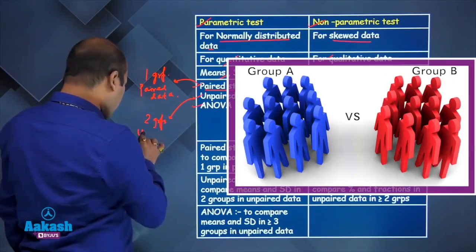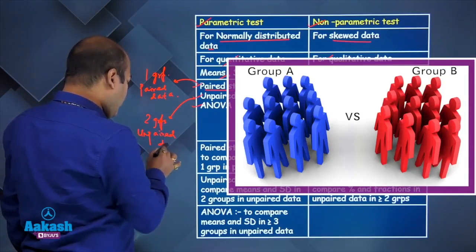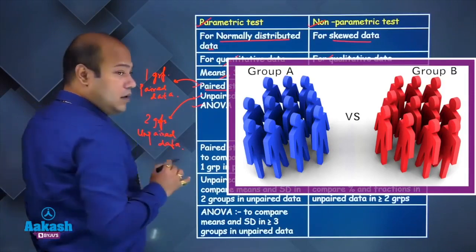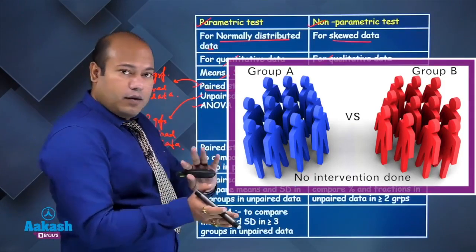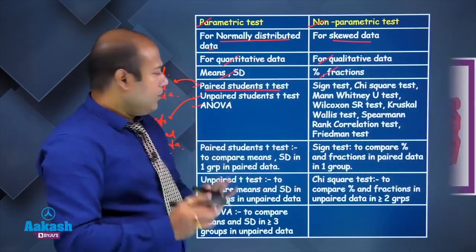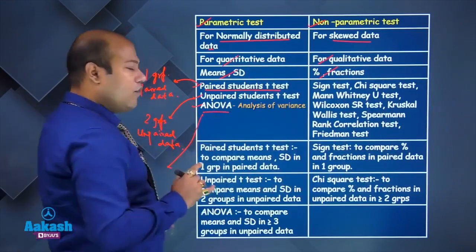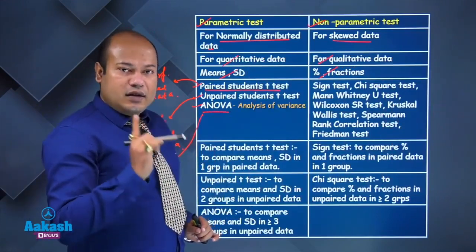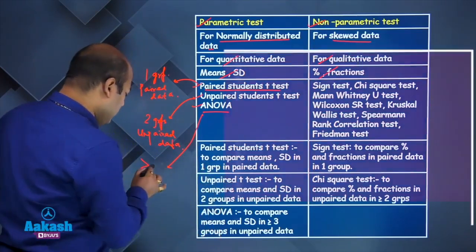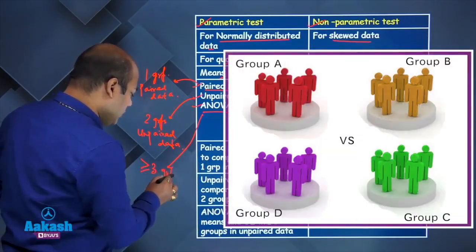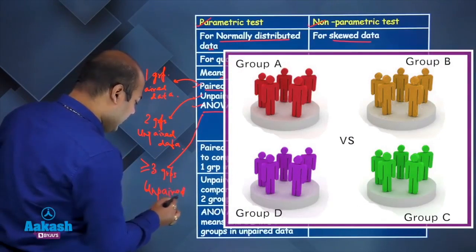What is the meaning of unpaired data? Unpaired data means there is no intervention done, so there is no before-intervention or after-intervention. For ANOVA — analysis of variance — it is for three or more groups, and it will also be unpaired data.